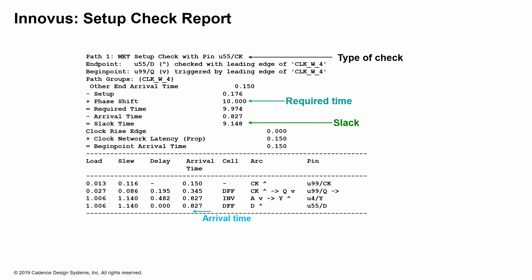Your required time is phase shift minus setup plus the other end arrival time. The arrival time calculation goes through all the cells in the particular path. You start out with your clock rise edge and your launch clock information, including any clock network propagation. The tool indicates it is a propagated clock, so there are buffers in the design or a long net delay, which is causing the 0.15 value. That is the begin point arrival time — where the launch clock starts.